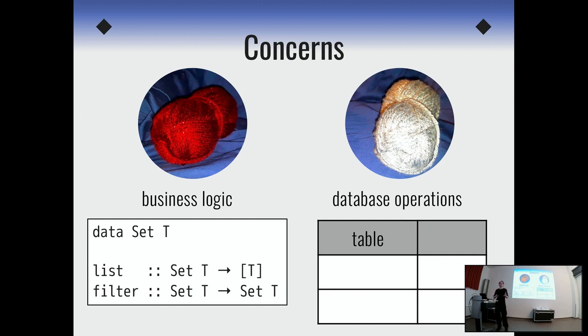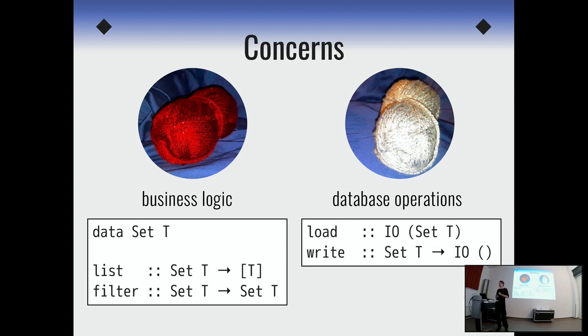And the other concern we have is operations on the database. So this would be about tables and rows inside the tables and it has columns. And one way to model this is the following interface. So we can load a set from the database. And here this is no longer a pure function, this is an IO action. And the other operation would be write. So we take a set and turn it in an IO action.